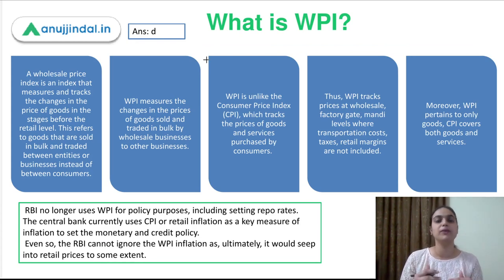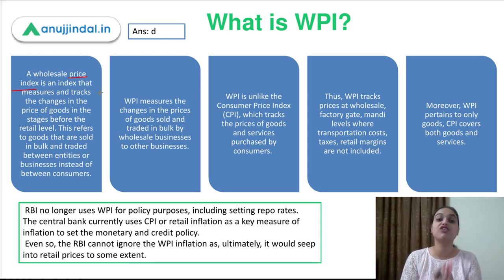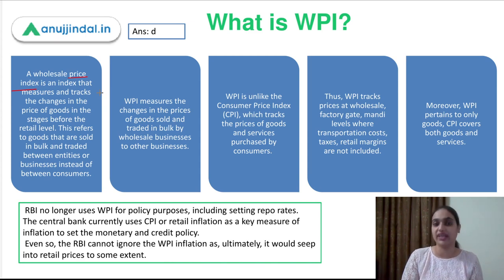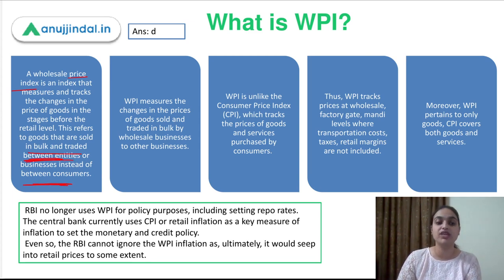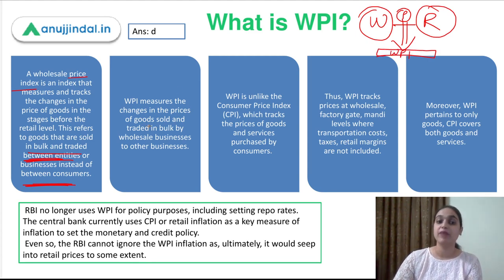Let's first discuss what is WPI. WPI stands for the Wholesale Price Index — it is basically an index which tracks the prices of goods before the retail level. The prices at which goods are exchanged between different businesses — that price level is known as WPI. It refers to goods that are sold in bulk and traded between entities, and not between consumers. For example, a wholesaler sells to a retailer at a certain price. There are numerous wholesalers selling to numerous retailers at certain prices — that price level is WPI. It measures the changes in price of goods which are traded in bulk by wholesale or other businesses.